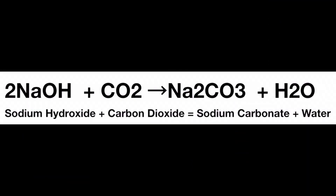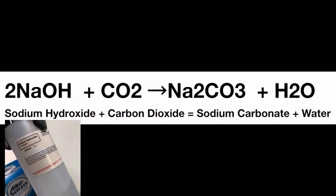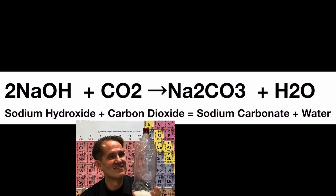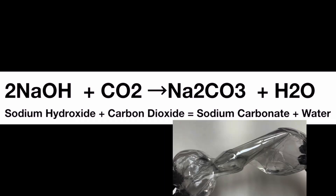Here's the balanced equation for this awesome acid-base reaction. We start with the reactants sodium hydroxide and carbon dioxide — two moles of the aqueous solution of sodium hydroxide, that's the 2 NaOH, and carbon dioxide gas, that's the CO2. Right away, that carbon dioxide gas starts to dissolve in the aqueous solution of sodium hydroxide, creating carbonic acid, which then reacts with the sodium hydroxide because it's a strong base. As that acid-base reaction occurs, it creates the products sodium carbonate — that's the Na2CO3 — and water, H2O.